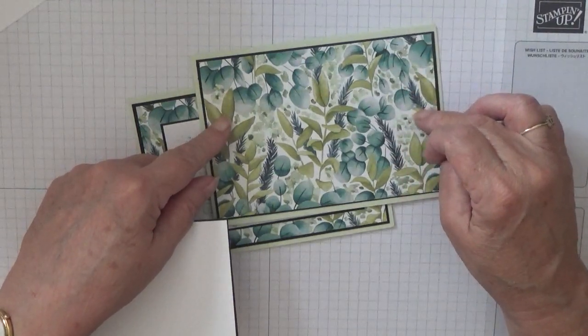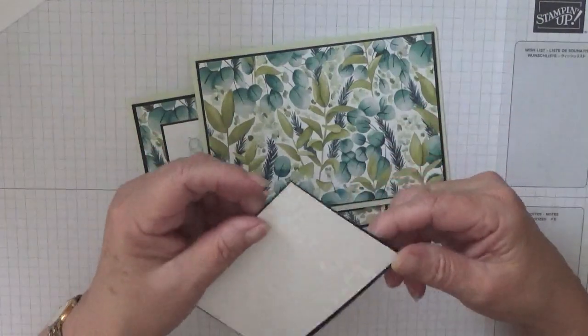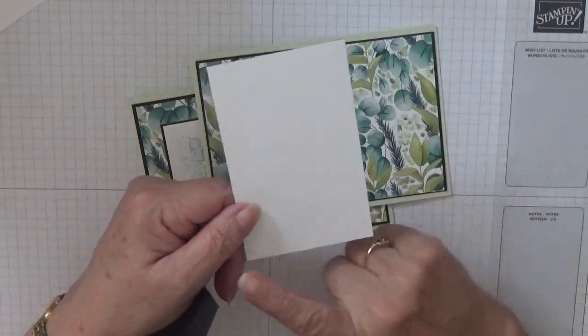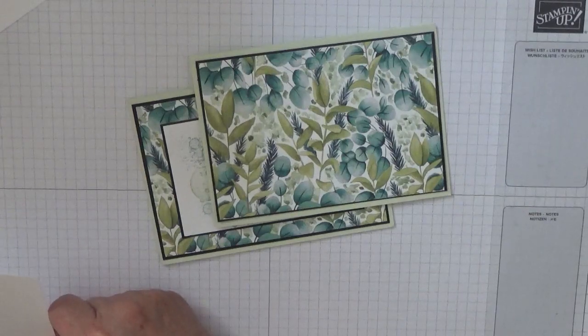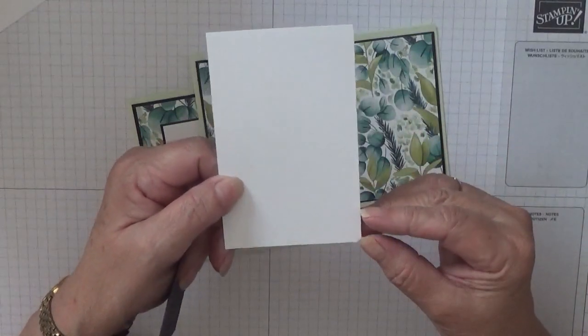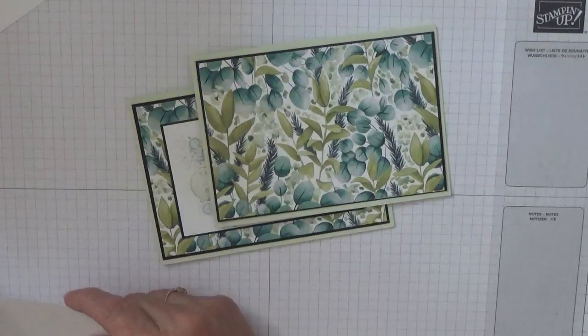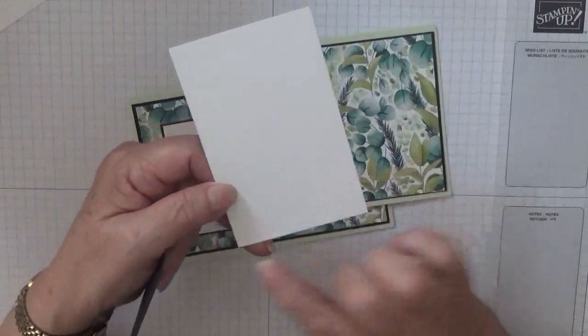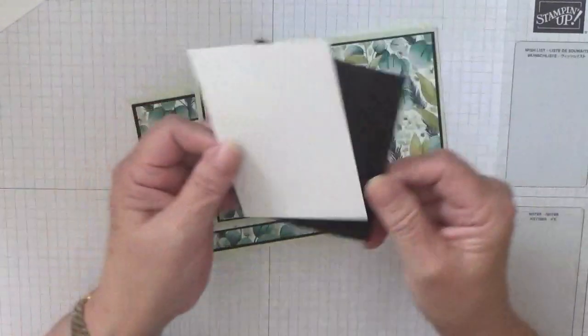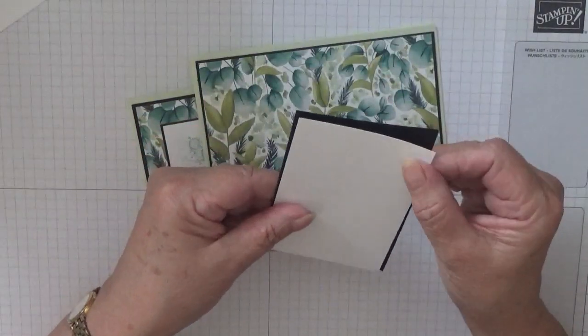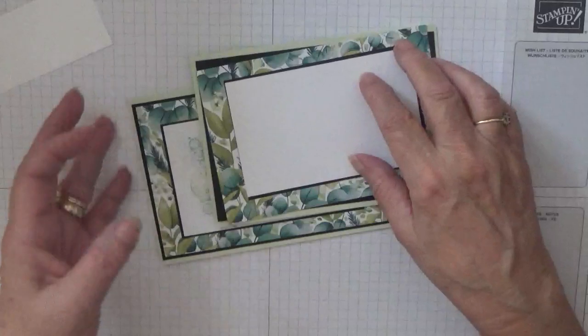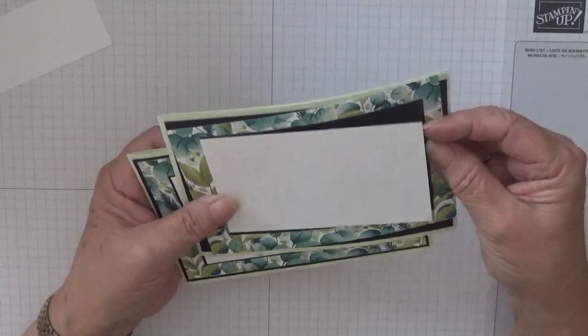This is 5 and 1/2 by 3 and 3/4. I also have a piece of white at 4 and 3/8 by 2 and 3/4. The black piece will be 4 and 1/2 by 2 and 7/8, and that will sit on top, which will sit on the front. I also have a scrap of white for the butterfly.